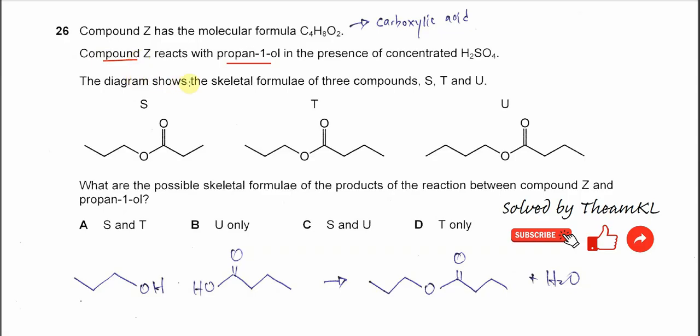The diagram shows the skeletal formula of three compounds, S, T, and U. What are the possible skeletal formulas of the products of the reaction between compound Z and propan-1-ol?